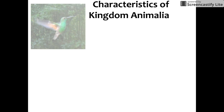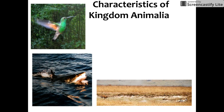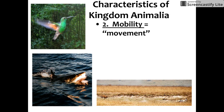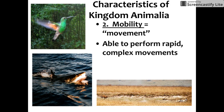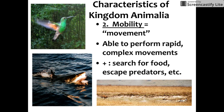Our second characteristic of animals — hopefully you'll notice a common theme with flying, swimming, and running — is that all animals are capable of movement. Many are able to perform complex, rapid movements, such as the gazelle trying to escape the cheetah in the bottom picture. The advantage of movement is that animals are able to go out and search for food, mates, and new habitats, and they can escape predators. These are significant advantages to being able to move about rather than being anchored to one place, like a plant.